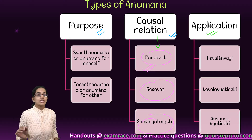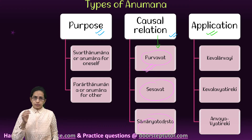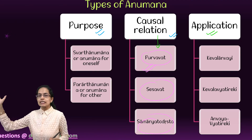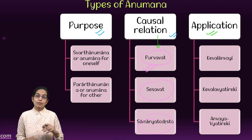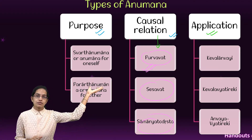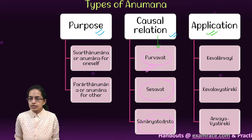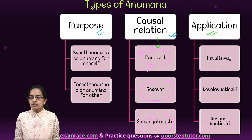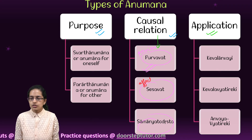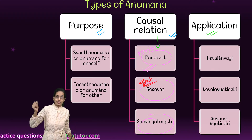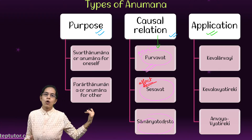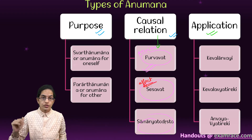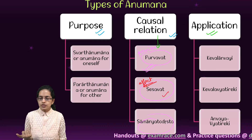Purvavat involves a perceived cause and an unperceived effect. For example, I see dark clouds in the sky and I infer an unperceived effect — that there would be heavy rainfall. So that is purvavat; the previous cause is known. Sesavat is the opposite: the effect is known and perceived. When I see a city flooding, the effect is known, but the cause is unperceived — I say there was heavy rainfall because of which the city is flooding. Therefore it is called sesavat.